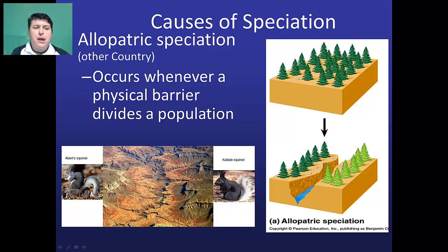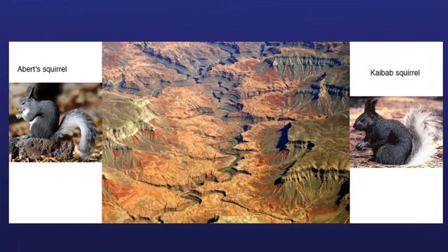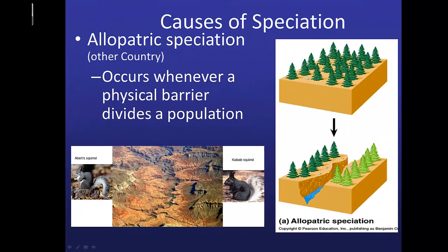Allopatric speciation occurs when a physical, geographical barrier divides a population so that it can no longer interbreed. As a result of their long-time separation, when brought back together, if they're unable to reproduce, then speciation has taken place. A great example is the Abert squirrel and the Kaibab squirrel of the Grand Canyon. The Grand Canyon acts as the physical geographic barrier separating the two squirrel species. As a result, their gene pools have changed such that the Abert squirrel has genes favoring a lighter color, whereas the Kaibab squirrel's gene pool favors a darker color. When the two squirrels are brought together artificially, they are less likely to reproduce, so many scientists believe speciation has occurred.